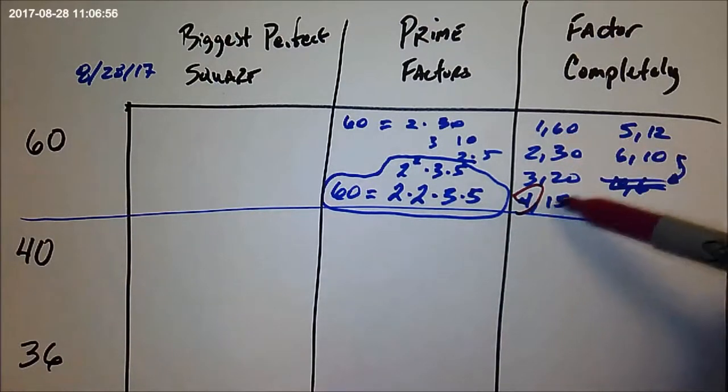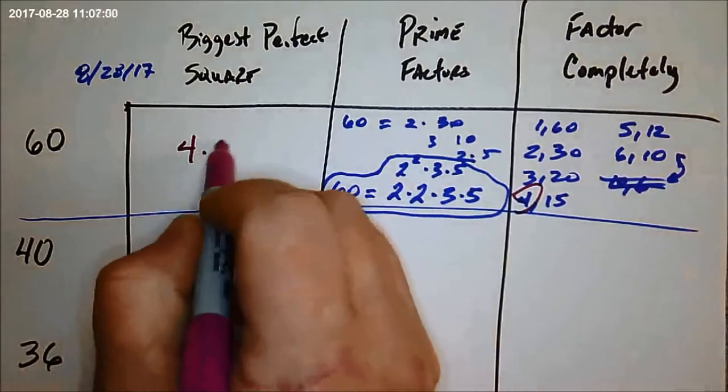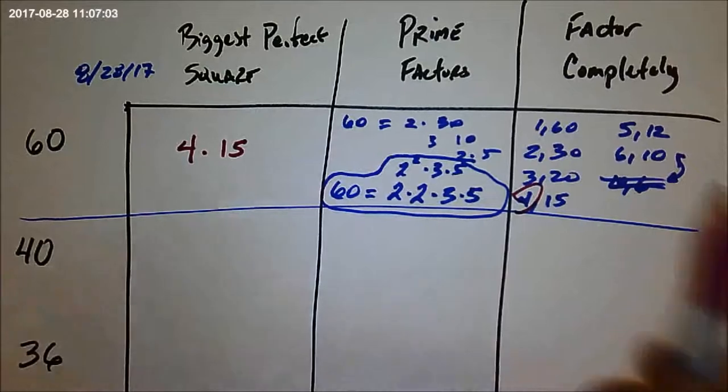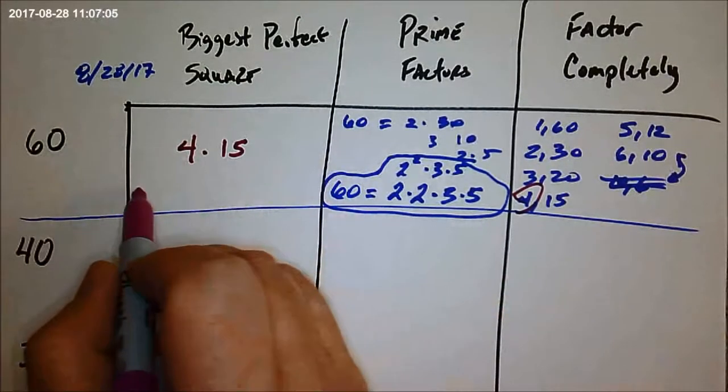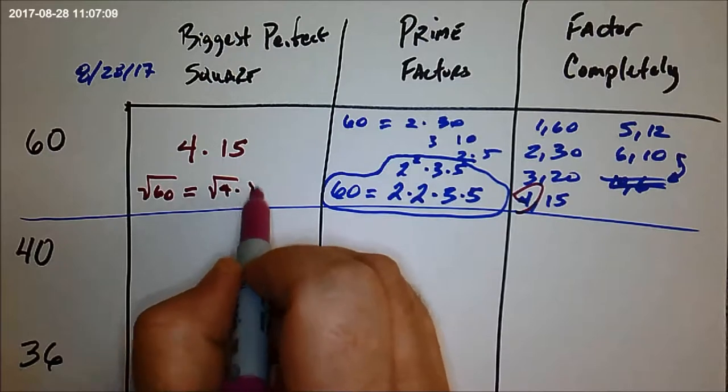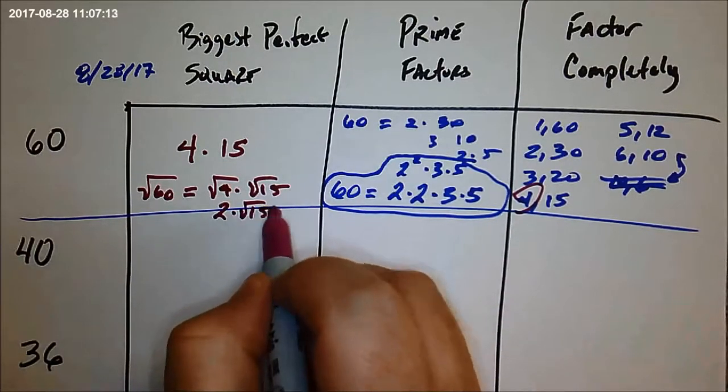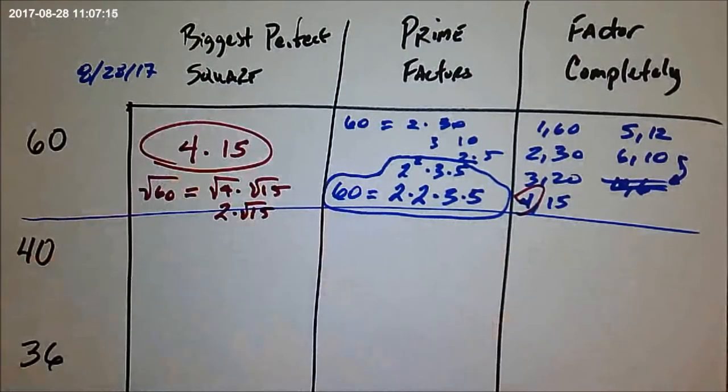And that's all of the numbers that multiply together, and actually four is the only one. So four times 15, because four is the perfect square. And where that's going to come into play is, in the future, you're going to be doing a square root of 60. That's going to turn out to be the square root of four times the square root of 15. And the square root of four is two. So this is your answer, but this is where it's going.